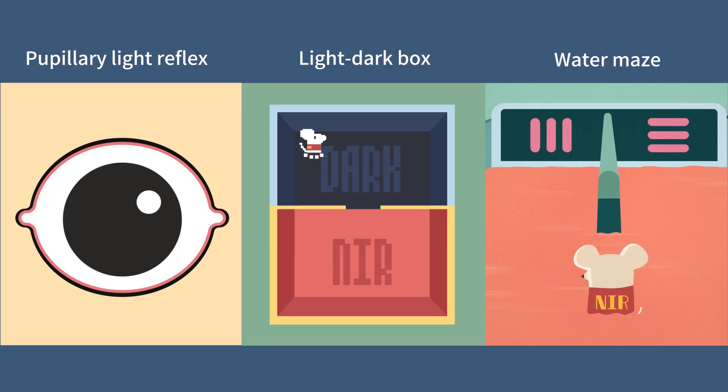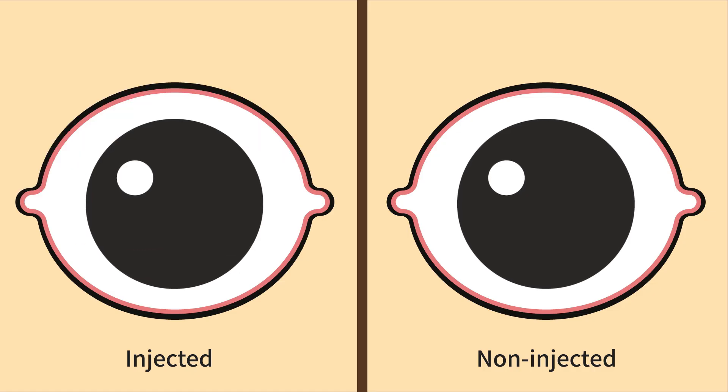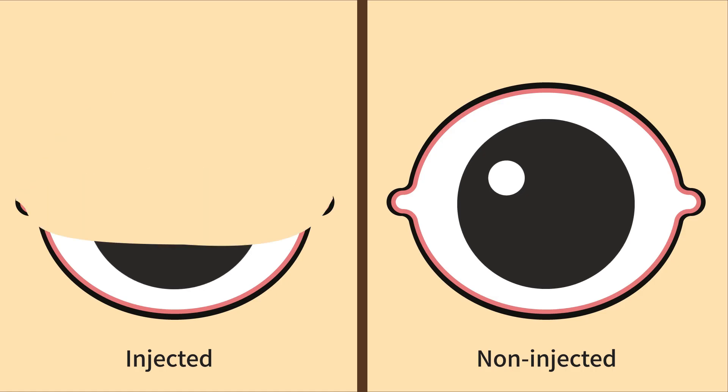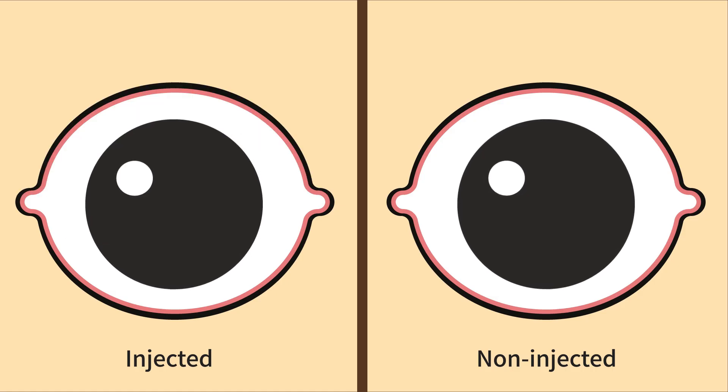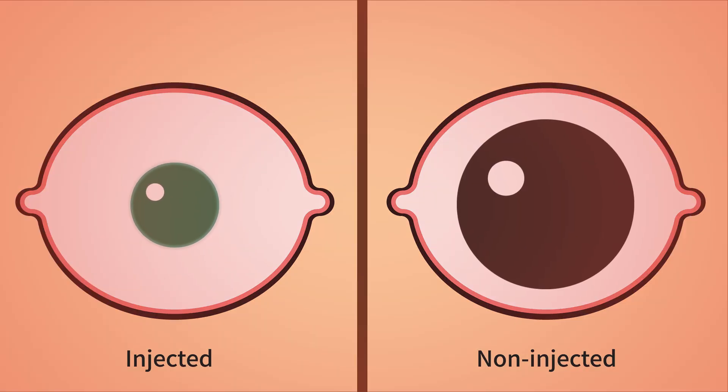To prove that the injected mice could see near-infrared light, the scientists did multiple experiments. In one simple experiment called pupillary light reflex, they shined near-infrared light into the eyes of injected and non-injected mice. The pupils of the injected mice constricted, while the non-injected mice showed no response at all.